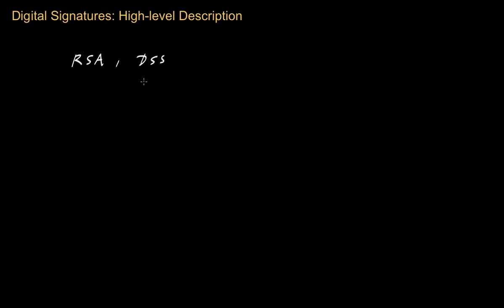The way that a digital signature scheme works: let's say you have a user called Alice, and Alice wants to digitally sign a document. In a digital signature scheme, Alice is going to first generate two keys. These two keys are known as the signing key, which is a private key, abbreviated as SK.